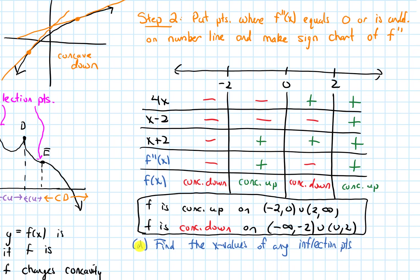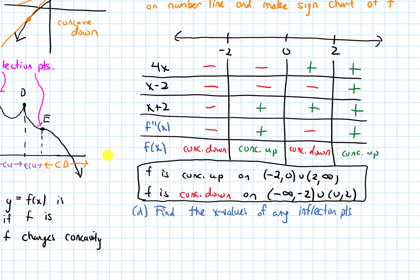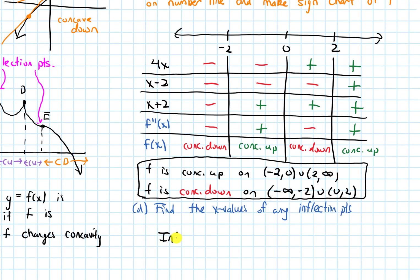Let's find the x values of any inflection points. Inflection points are places where the original function is continuous and the concavity changes. Looking at the sign chart, the concavity changed at negative 2 from down to up, at 0 from up to down, and at 2 from down to up. So the inflection points are at x equals negative 2, 0, and 2.